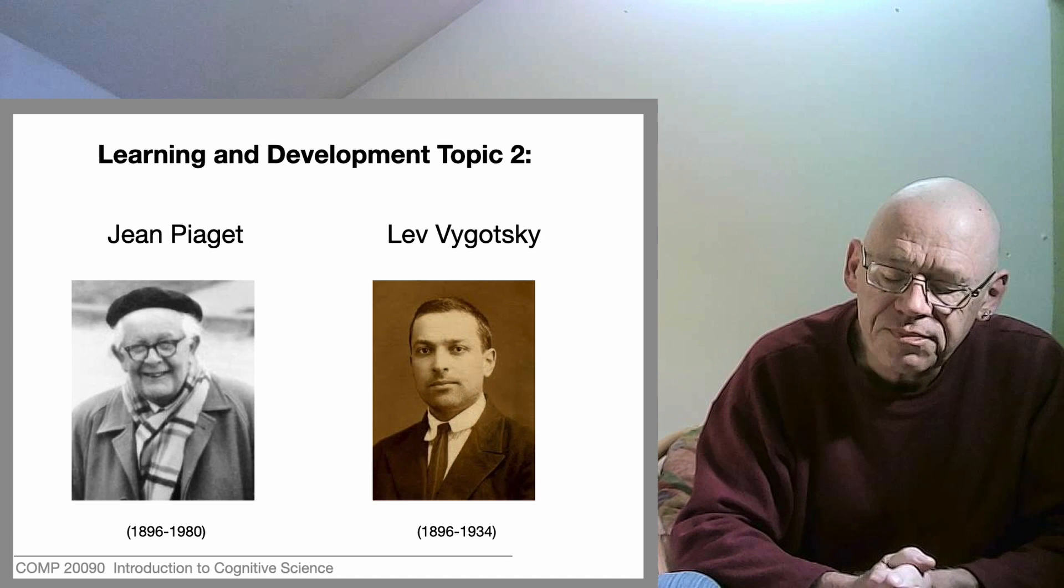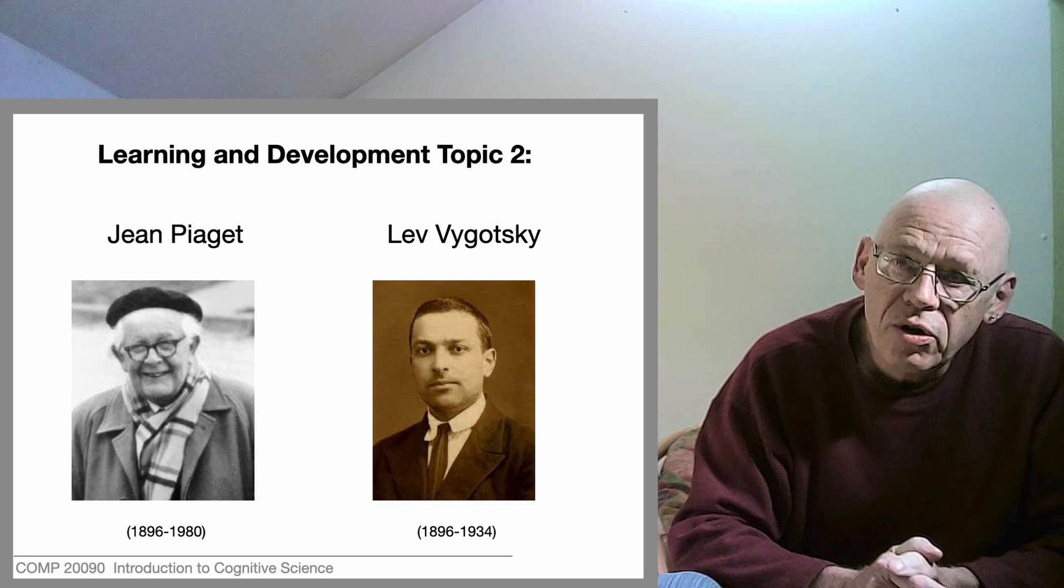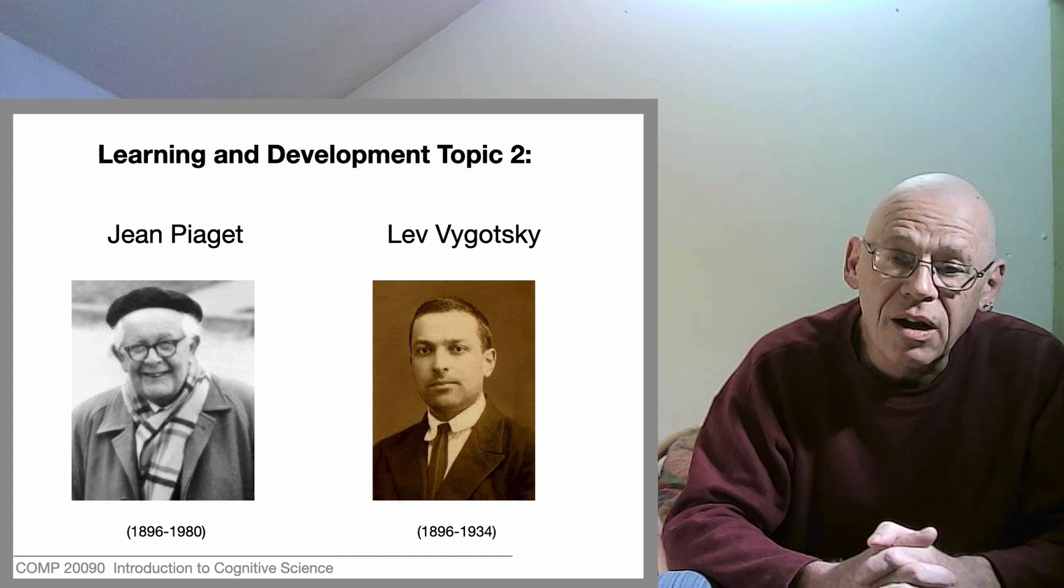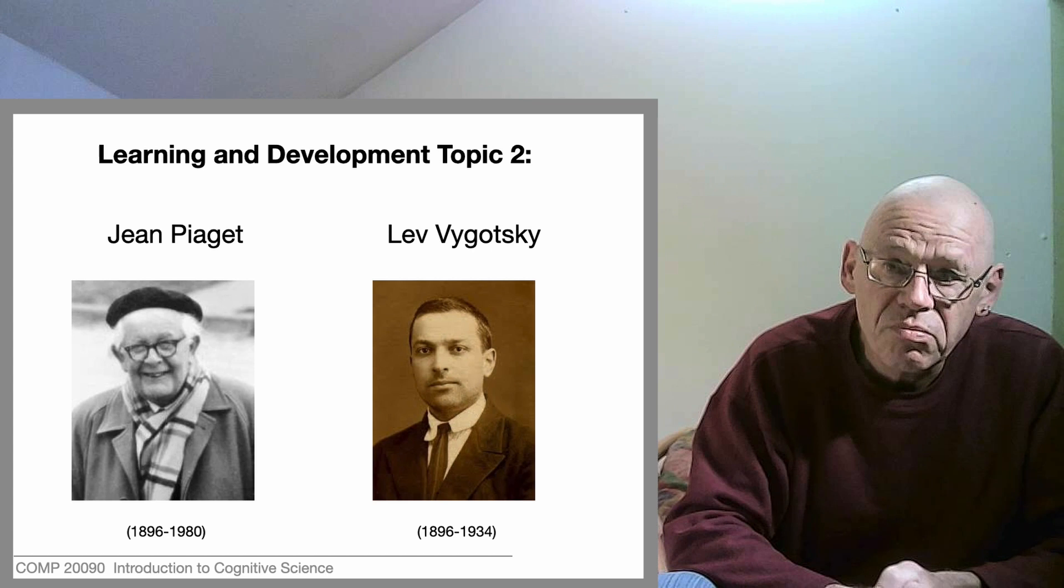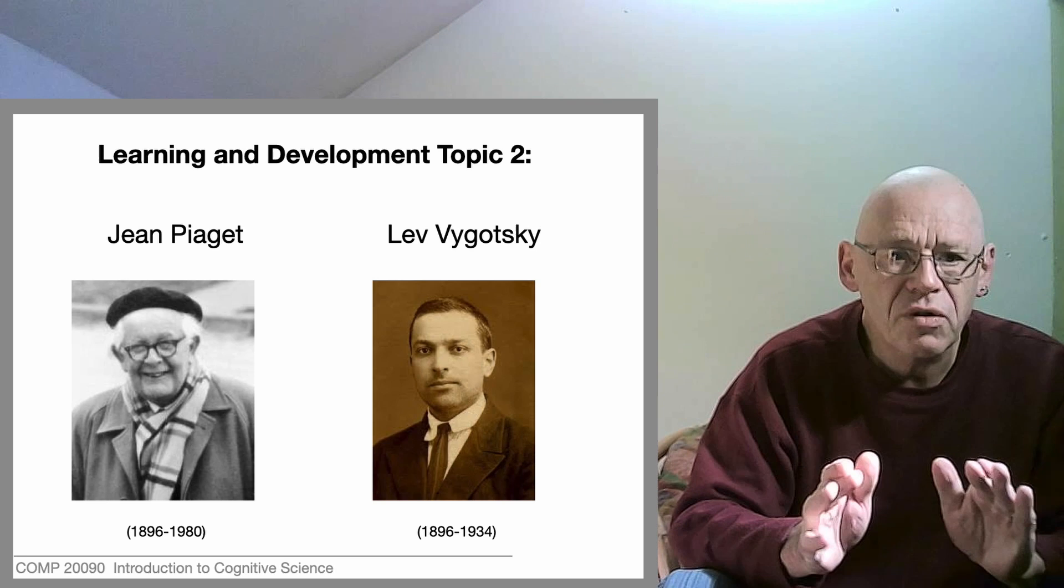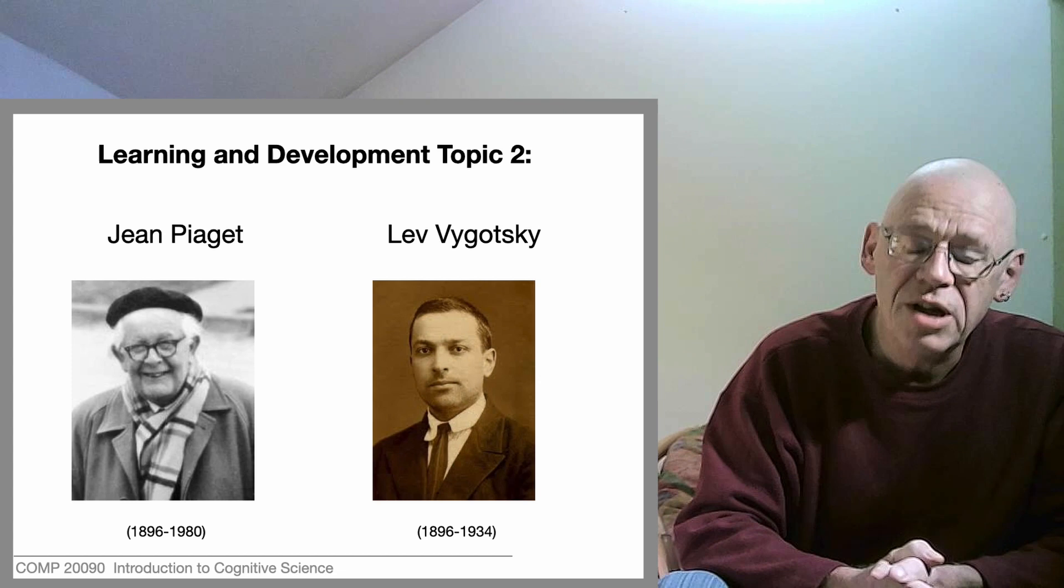Lev Vygotsky, the chap on the right, was born in the same year but in Russia. The Russian Revolution was 1917 and he lived through that. He did not live a long life, dying in 1934 very young. His few years as a psychologist were spent in the newly formed and somewhat chaotic Soviet Union. The circumstances of their birth lead to great differences in the way they come at understanding humans.